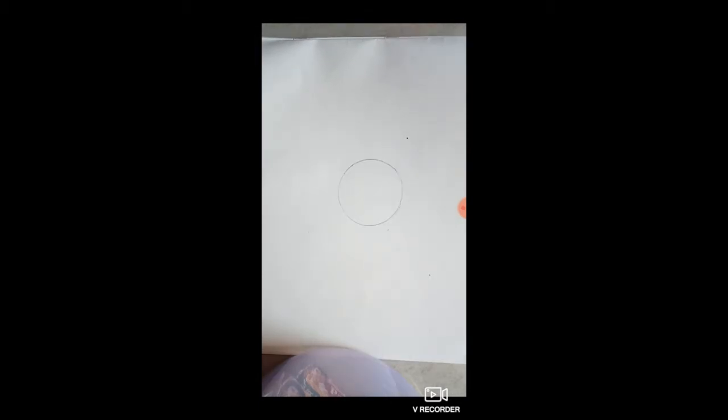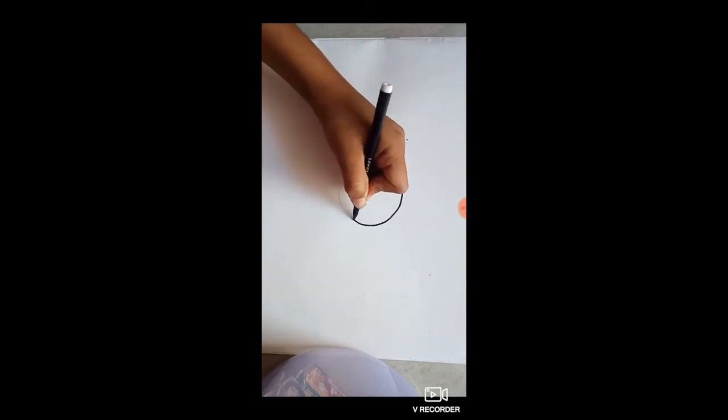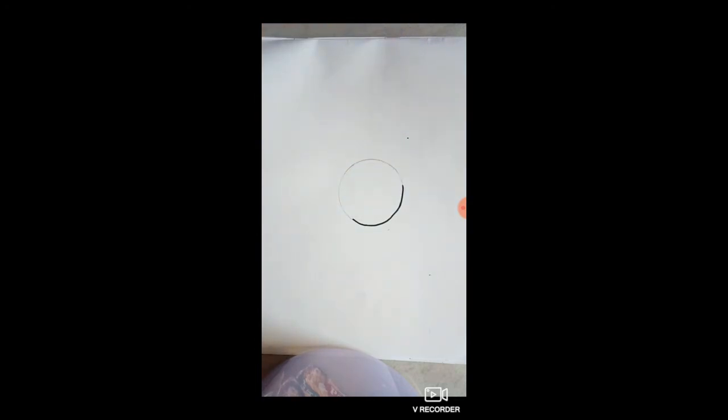When you're done with the circle, what you have to do is take a sketch pen and outline it. The circle of ours will act as the moon. Okay, so we are done with the outlining of our moon.